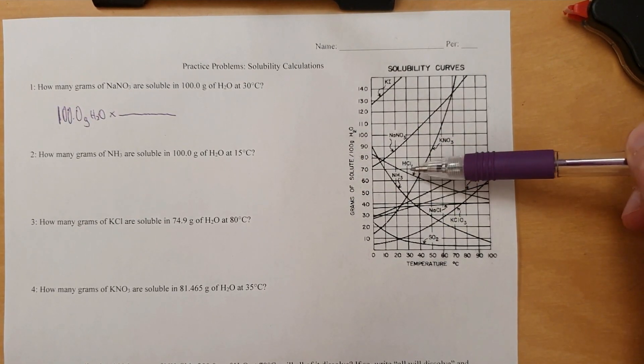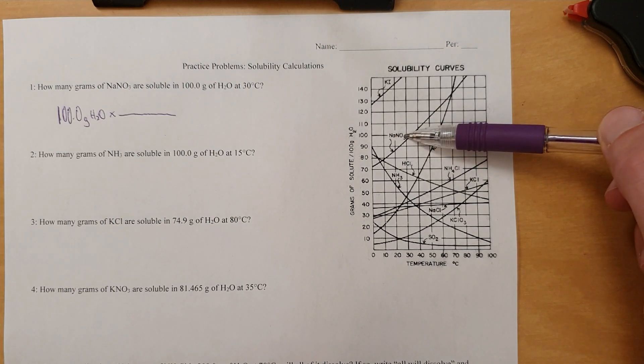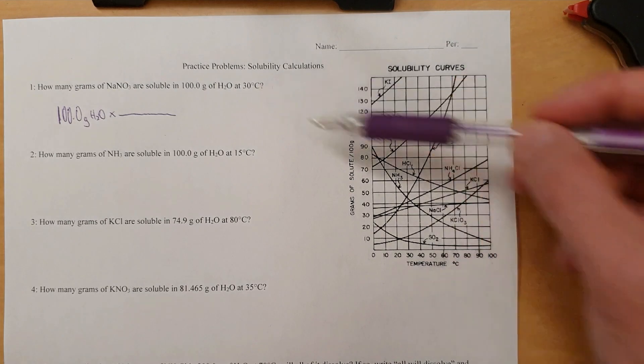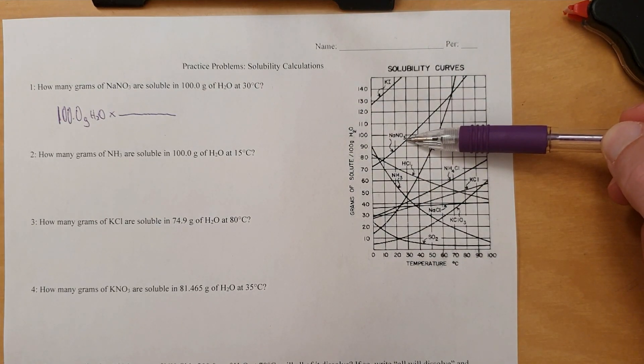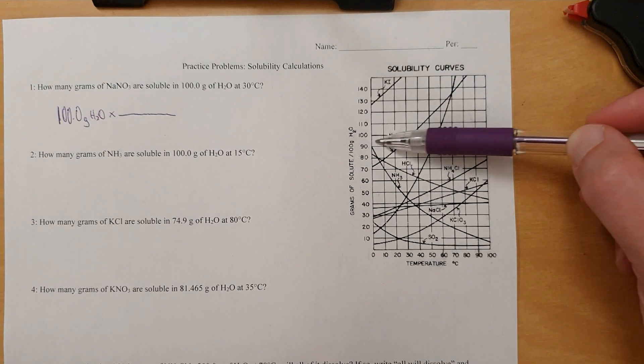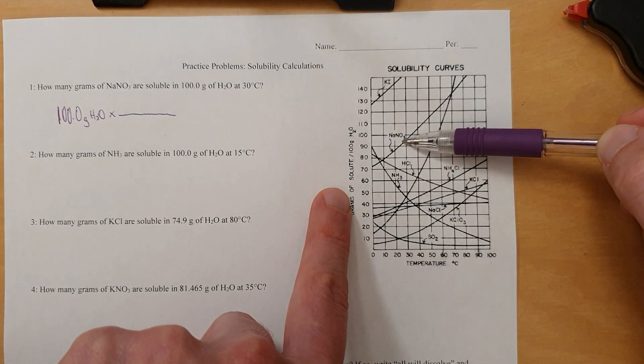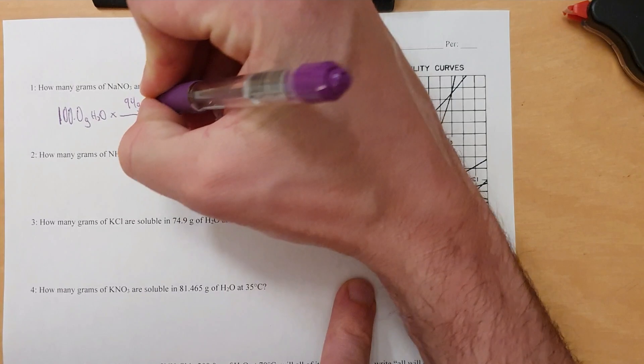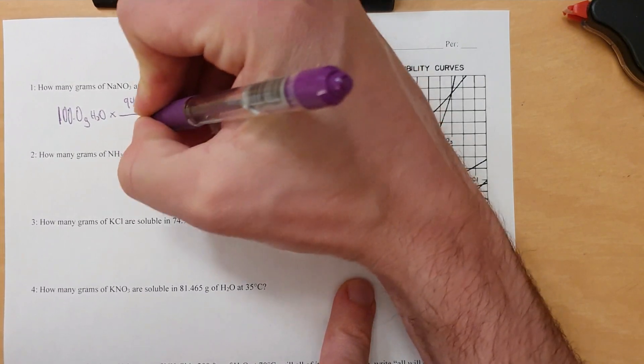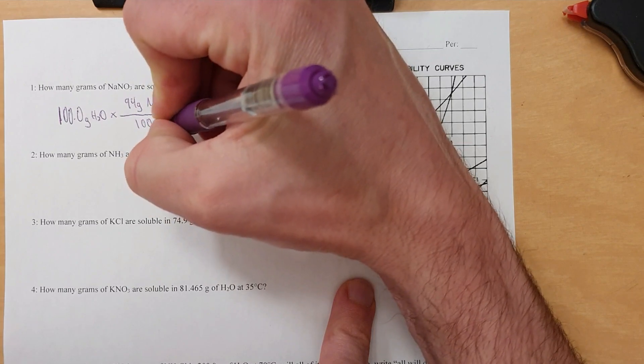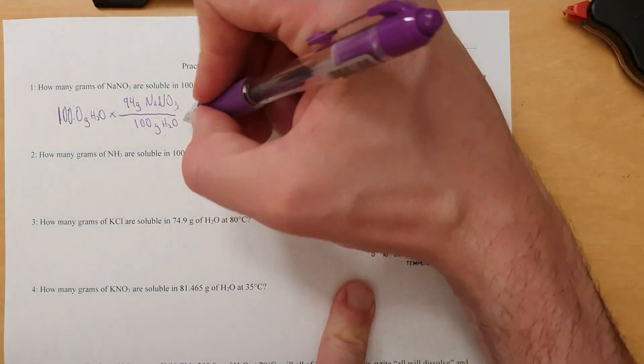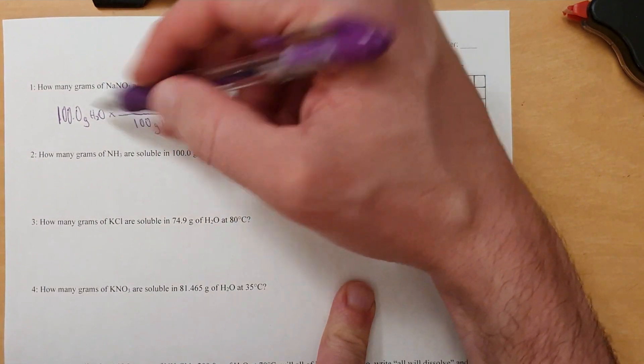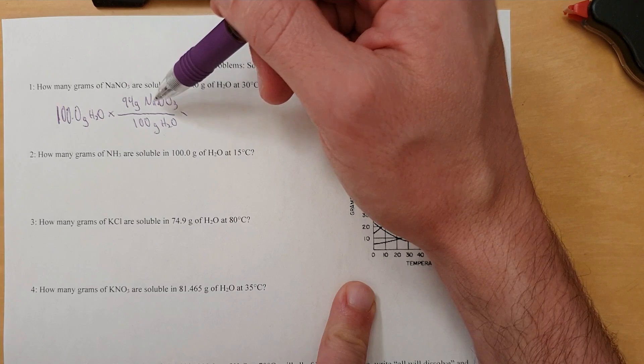So you'll notice this is grams of solute per 100 grams of water. So remember, solute is the thing that's getting dissolved. So if we're looking at NaNO3 getting dissolved in water, then sodium nitrate is the solute. So it says at 30 degrees Celsius, 30 degrees intersects with this line here. We trace it over. It's just under 95. I'm going to call it 94. So 94 grams of sodium nitrate is expected to dissolve per 100 grams of water. So here's how we write that. 94 grams of sodium nitrate per 100 grams of water. Make sure to include chemical identities in what you write. The reason why is because you want to make sure that the right things are canceled with the right things. Grams of water does not cancel with grams of sodium nitrate, for example.